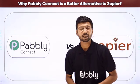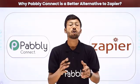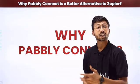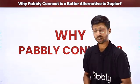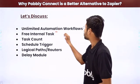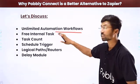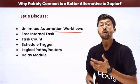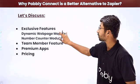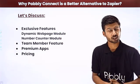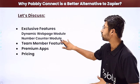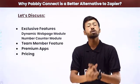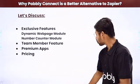A lot of users were asking why Pabbly Connect is a better alternative to Zapier. In this video, we are going to discuss some of the most crucial points: unlimited automation workflows, free internal tasks, task count, schedule trigger, logical paths, delay module, exclusive features like the dynamic web page module, number counter, team member feature, premium apps, and pricing.